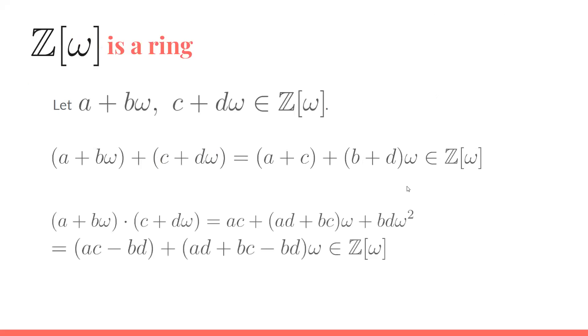The first thing is to show that this is a ring. We're going to show closure under addition and multiplication. Other things like associativity and distributivity come out of the complex numbers and the integers. If we just add, we rearrange parentheses and that ends up working out. a + c and b + d are both integers, so that's okay.